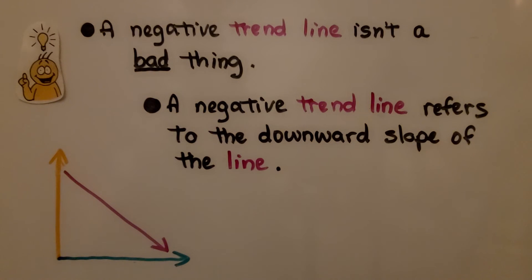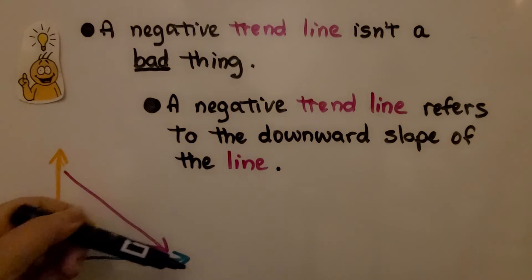A negative trendline isn't a bad thing. A negative trendline refers to the downward slope of the line. That's all.